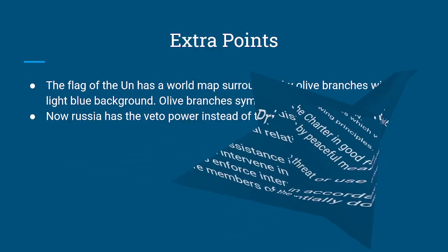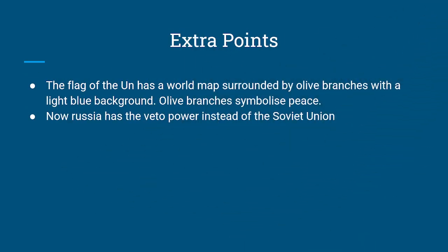Extra Points: The flag of the UN has a world map surrounded by olive branches with a light blue background. Olive branches symbolize peace. Russia has the veto power instead of the Soviet Union.